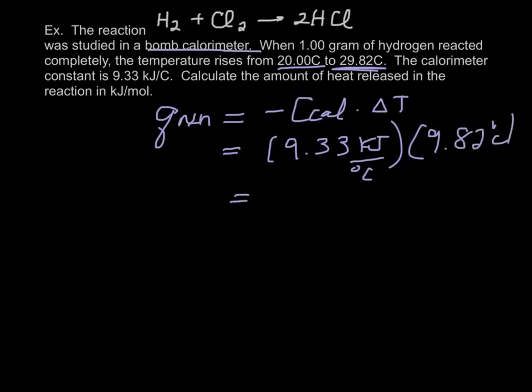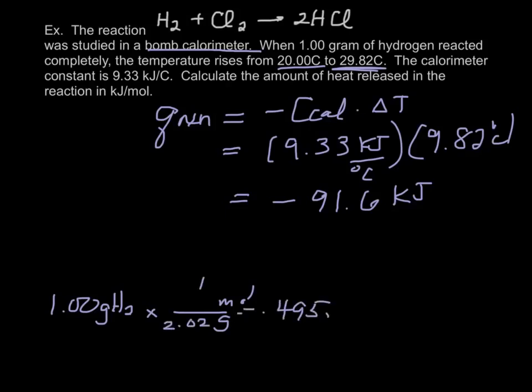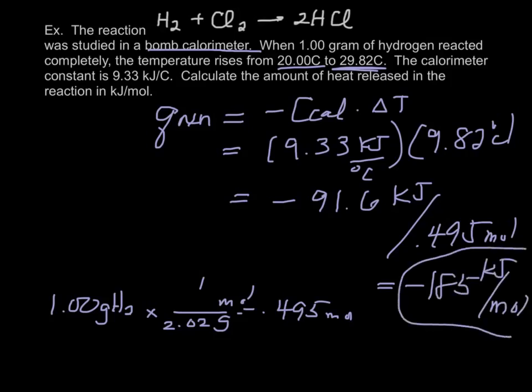So, the Q, the heat released, is minus 91.6 kilojoules. But we want to report that in terms of kilojoules per mole of stuff I reacted. So, I take one gram of hydrogen, and I'm going to go ahead and change that to moles. So, I'm going to take this 0.495 moles, and what I get is negative 185 kilojoules per mole. This is a value that I could probably look up in a table somewhere. Every time I do this reaction, I should get this amount of heat when I use one mole of hydrogen.